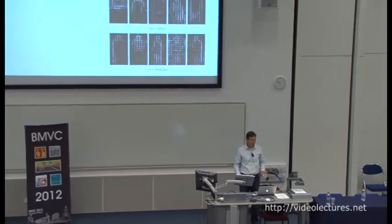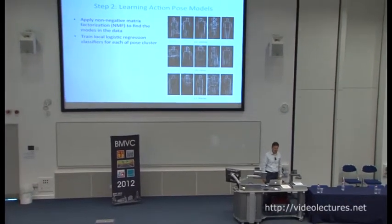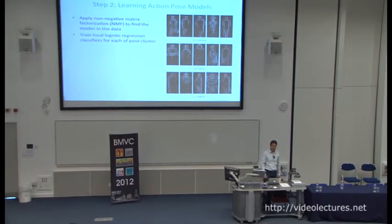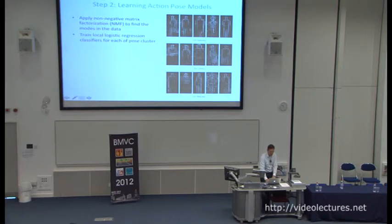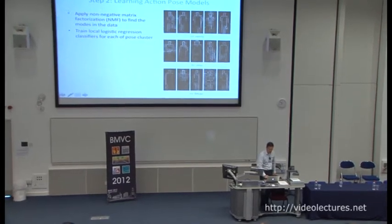After improving the precision of the retrieved dataset, we apply non-negative matrix factorization to find the modes in the data. For running, five modes are found: a side pose, three-quarter poses, a front pose, and poses with one leg up and both legs down. Using these, we train a separate logistic regression classifier for each pose mode — you can think of these as key poses. These are then used in action recognition in video.